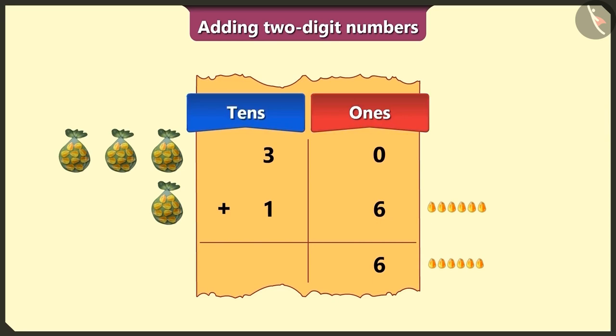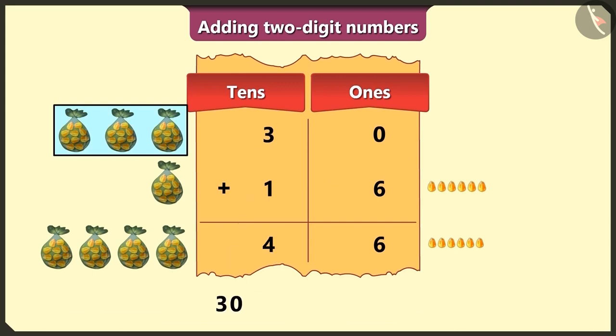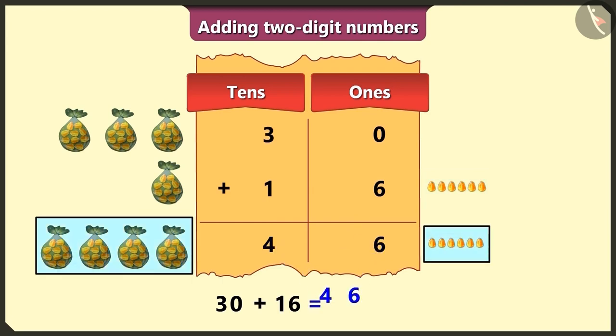Now in the tens box, we will add the numbers 3 and 1, the total of which will be 4. So how many total number of grains are here now? Yes, here there are 3 tens or 30, and if we add 1 tens and 6, that is 16, we get a total of 46 grains.